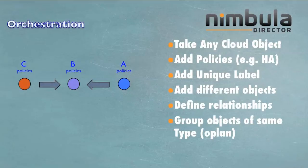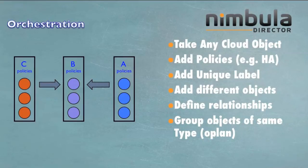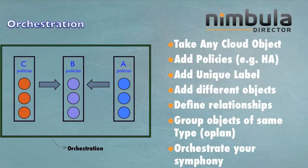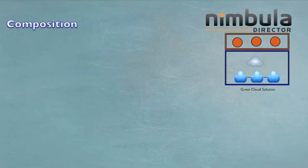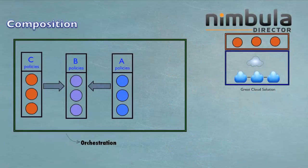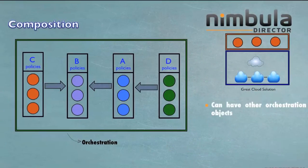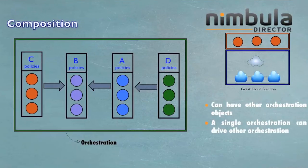We can group objects of the same type and call it an O-plan. The entire thing is an orchestration. An orchestration can have other orchestration objects as well, and a single orchestration can drive other orchestrations — these are called composite orchestrations.